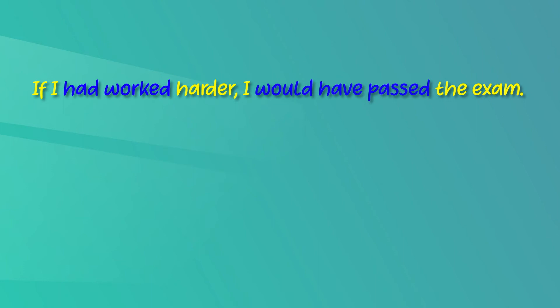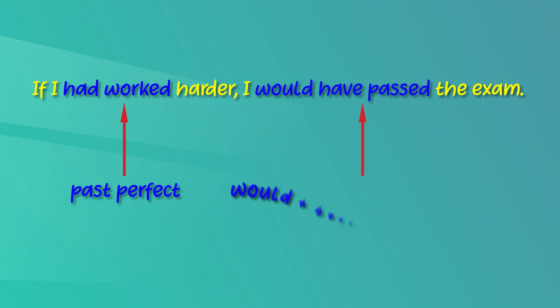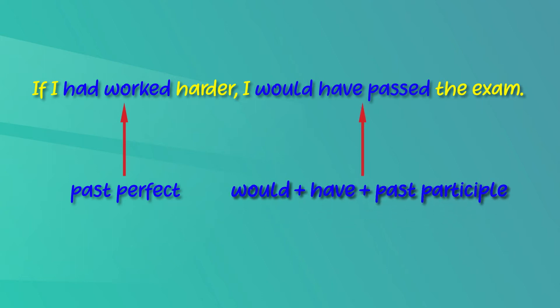Now let's see how a type 3 conditional sentence is written. As you can see, the verb of the conditional clause — "had worked" — is in the past perfect tense. The verb in the result clause — "would have passed" — is written with would + have + the past participle form of the verb.